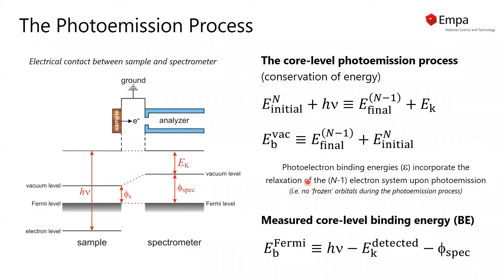If you consider the photoemission process, we have the energy of the initial system with N electrons plus the energy of the incoming photon, and we measure the kinetic energy of the outgoing photoelectron.